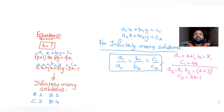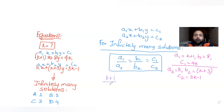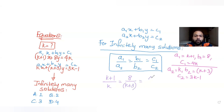Using the condition for infinitely many solutions, I get the result: (k+1)/k = 8/(k+3) = 4k/(3k−1). We have three ratios equal to each other, so we can equate any two ratios at a time to find the value of k.